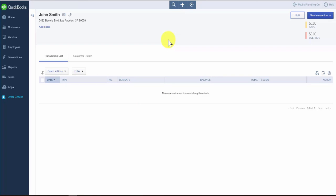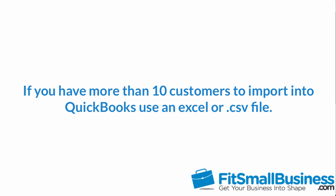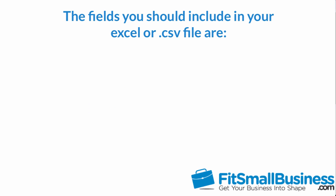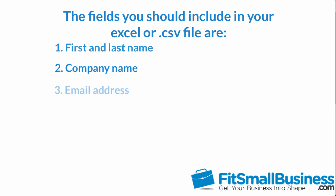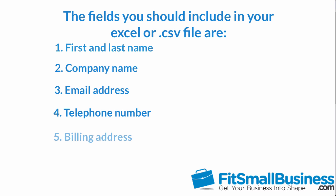That wraps up the lesson on how to manually set up customers in QuickBooks Online. If you have more than 10 customers to set up, I recommend that you put the information in an Excel document and import the data into QuickBooks Online — this will save you a lot of time. QuickBooks allows you to capture a lot of data about customers, but the key fields that you should include in your Excel or CSV file are the first and last name for individual customers, the company name for commercial customers, email address, telephone number, and billing address. Don't worry about the format of the spreadsheet — just make sure that you include these key fields. Once you have your spreadsheet ready, you are ready to import the data into QuickBooks.